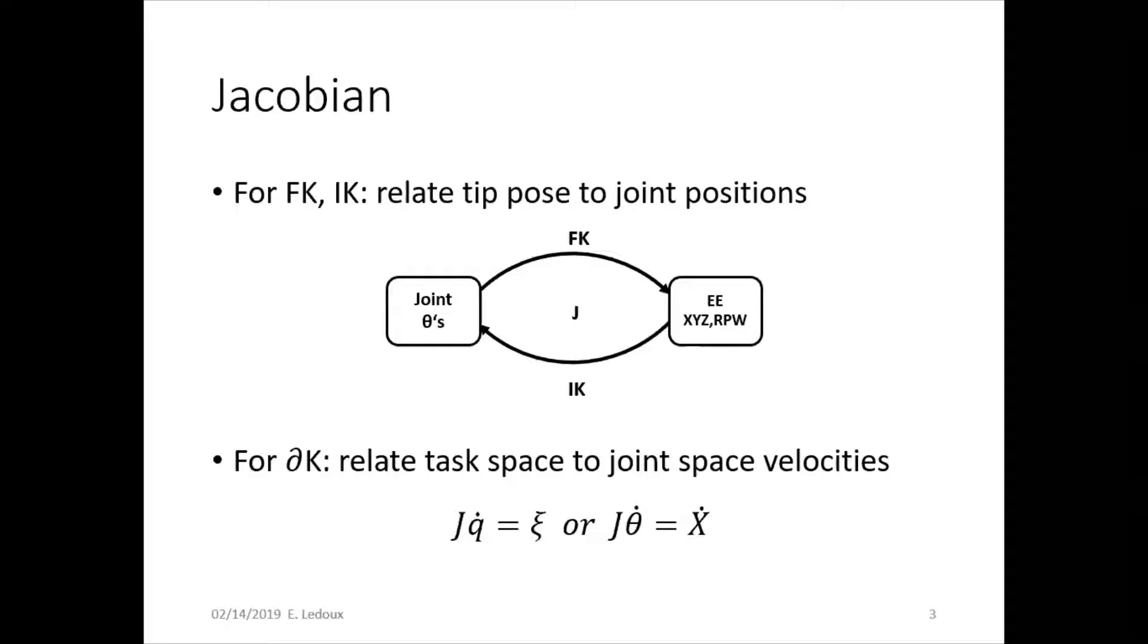Task space is what the end effector, the claw of the robot, is moving through, and joint space is the positions of the actual joints of the robot. Down here, x dot is task space and theta dot is joint space.